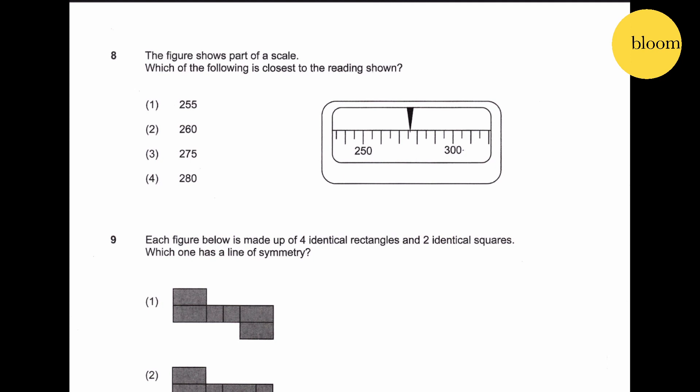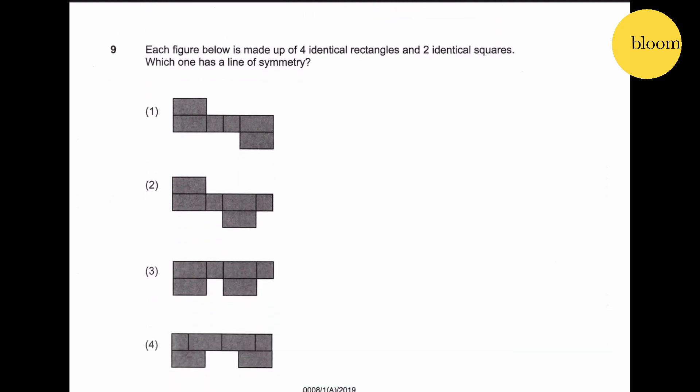Question number 8: the figure shows part of a scale, which of the following is closest to the reading shown? Let's see - 250, 260, 270, 280, so each of these is 5. 2.55, so this should be 2.75, 2.55.